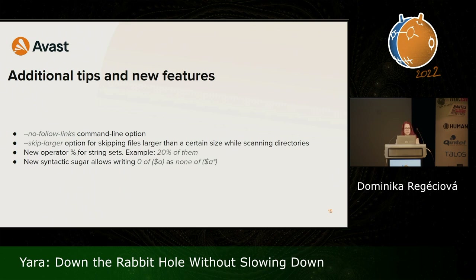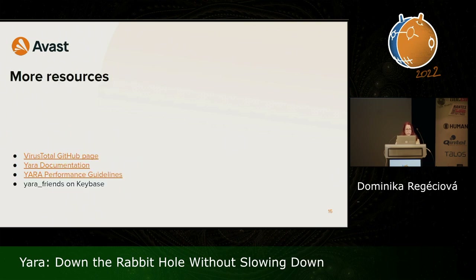Some additional tips: YARA now has the option skip-larger, which causes files over a specified size to be skipped entirely, which can drastically improve scanning. Also, check out the GitHub pages and documentation. Florian Roth and I worked together a little on guidelines for improving your rules, so check those out. I would also strongly recommend the Keybase channel 'YARA friends,' where you can discuss possible improvements to future versions and ask for help with specific cases.